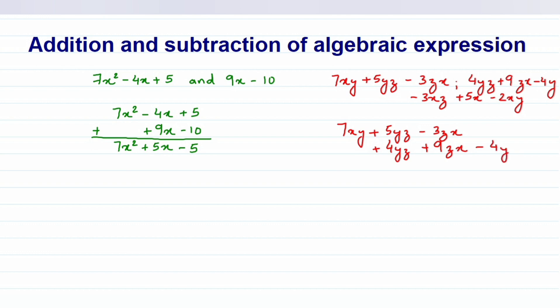Now we'll go to the third expression. I have minus 3xz — you can write xz or zx, both are the same — so I'll write it below 9zx as minus 3zx. Then we have 5x. Again, 5x is not present in the first or second expression, so I'll write it separately as plus 5x. And the last term is minus 2xy — xy is present as 7xy in the first expression — so I'll write minus 2xy below it.